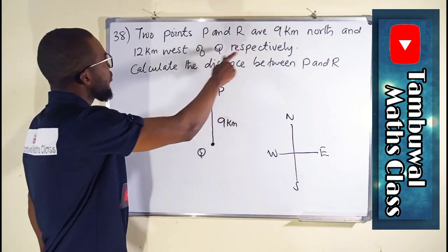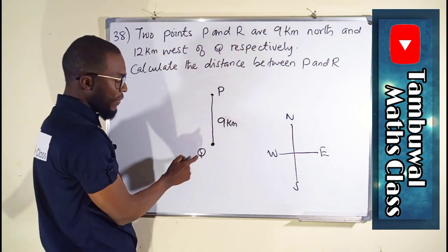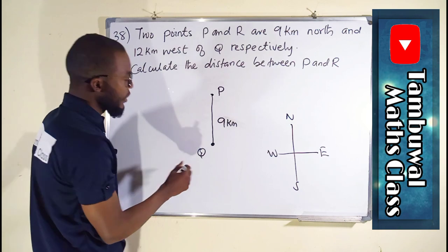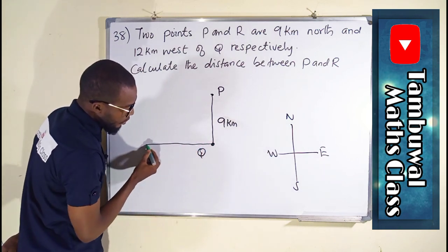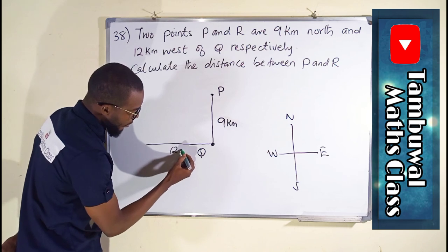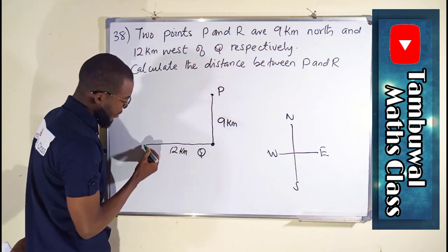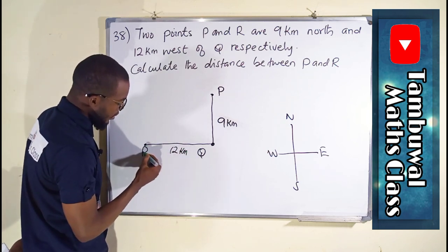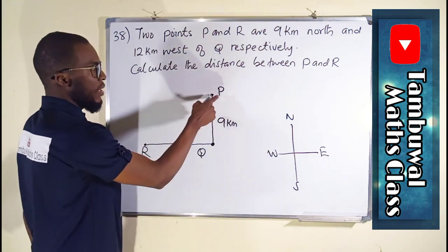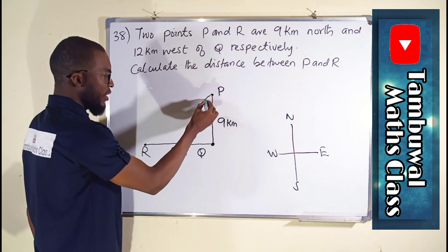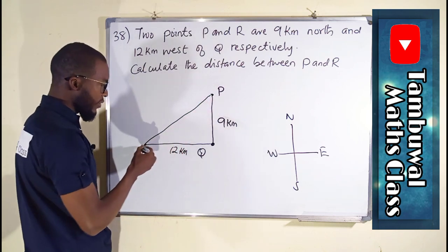And R is also 12 km west of this Q. So this is the west of Q, 12 km. This is R. And the question says we should find the distance between R and P. So you just join the line here and connect the two points.